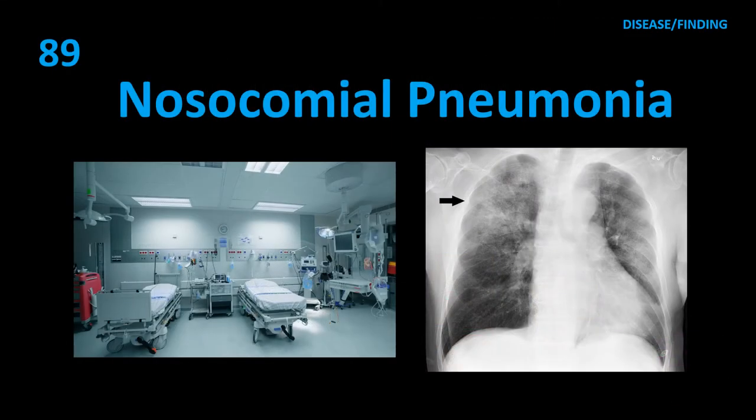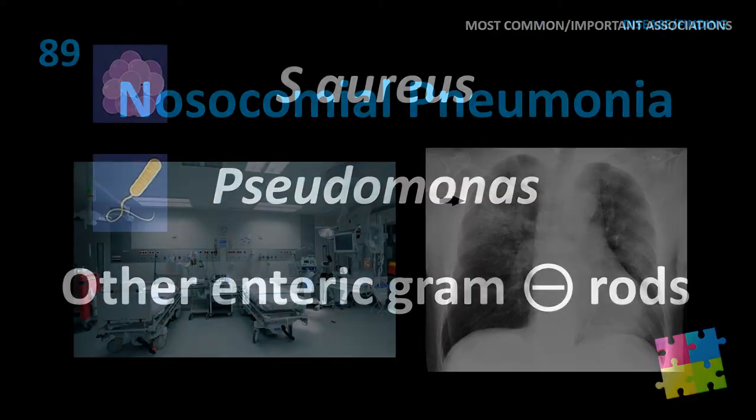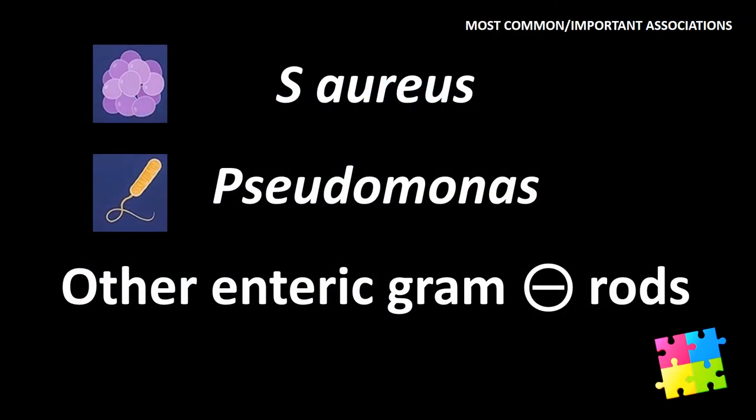Item 89: Nosocomial pneumonia — Staph aureus, Pseudomonas, and other enteric gram-negative rods.